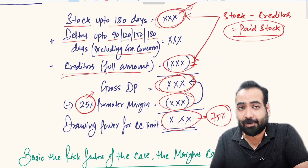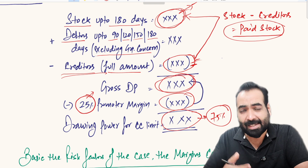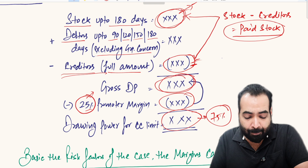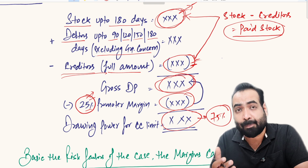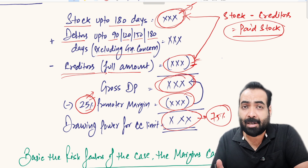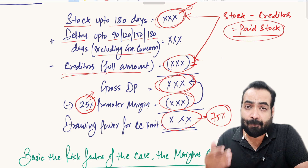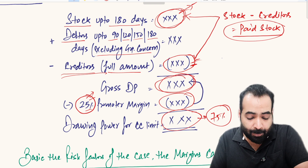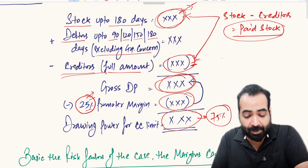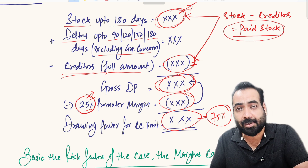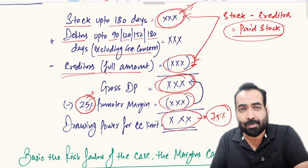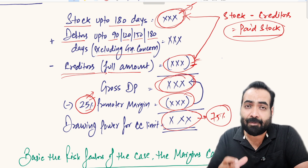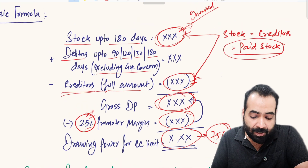The 25 percent promoter margin is standard, but this can vary based on the risk profile of the case. Some banks may ask for 30, 35, 40, or even 50 percent promoter margin. I haven't seen a case where the margin is less than 25 percent — 25 percent is the benchmark, but a higher margin is possible.